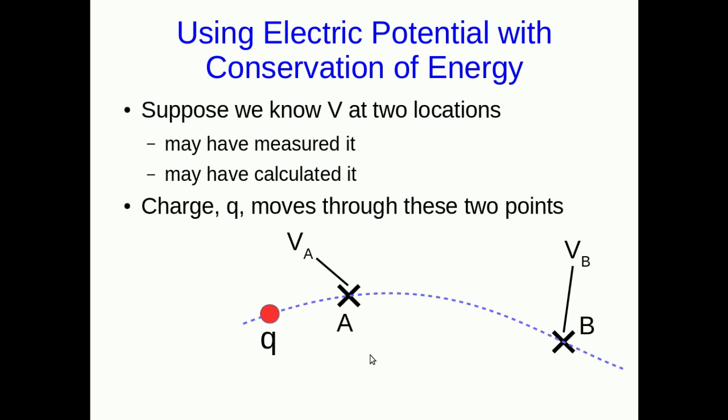Now we have charges moving through this region. So again, perhaps this is a wire, and there are electrons flowing through it. Or maybe this is in an x-ray machine, and we're looking at an electron beam that's about to collide with a target and generate x-rays. Whatever. We know, say, the speed of this charge as it passes through point A, and we might like to know what its speed is as it passes through point B.